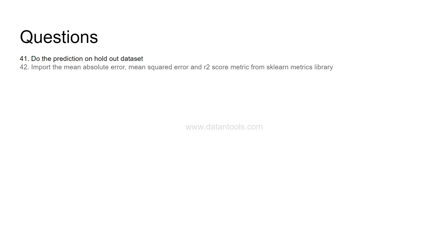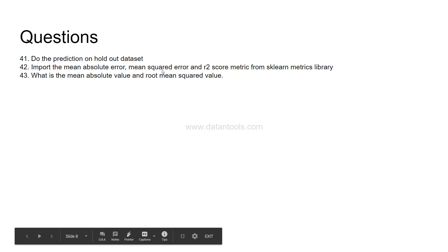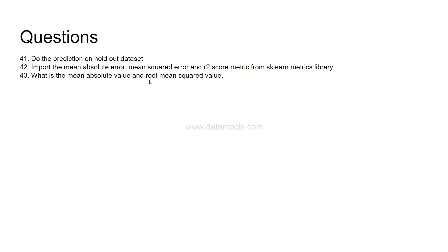Import the mean absolute error, mean squared error, and R² score metrics from sklearn's metrics library. You need to know how to import all of those in one single line for the purpose of evaluating the model. Then you need to identify what is the mean absolute error and root mean squared error — note that root mean squared error requires taking the square root within Python. You should also understand the difference between mean absolute error and root mean squared error, which can be an interview question.